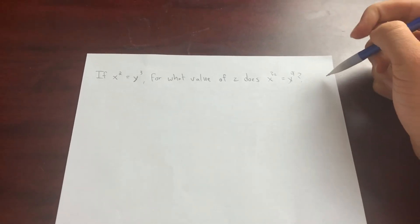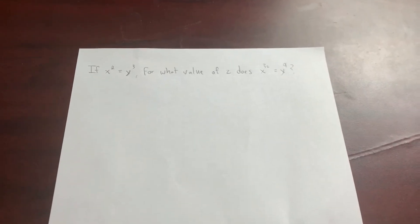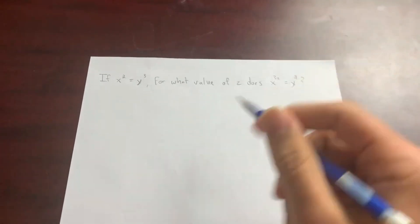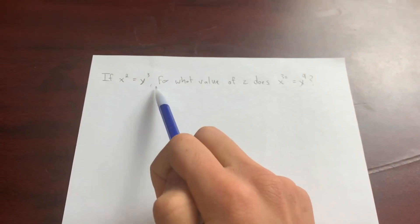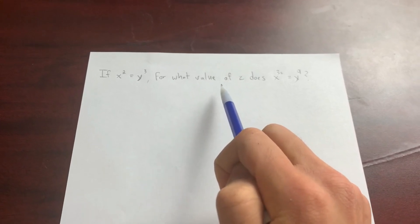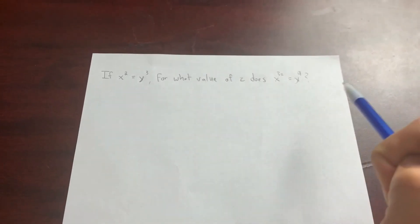This problem right here was straight from my Discord group. If you haven't joined, then link in the description below. It's saying if x squared equals y cubed, for what value of z does x to the 3z equal y to the 9.